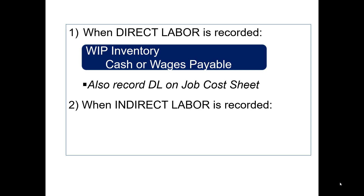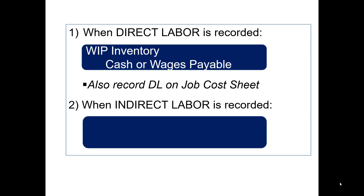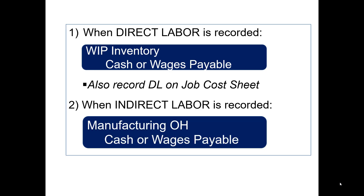Take a minute to think about what this means. Factory wages were paid — you would normally think this would be a wages expense account, but because it is direct labor, which is a direct product cost, it will go into the work in process inventory. These laborers worked to create inventory, so we record their cost as an asset. If it is indirect labor, you will identify that as an actual overhead cost; therefore, you will debit manufacturing overhead and credit cash or wages payable.